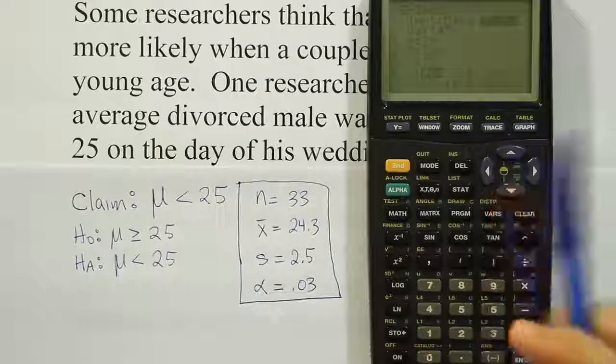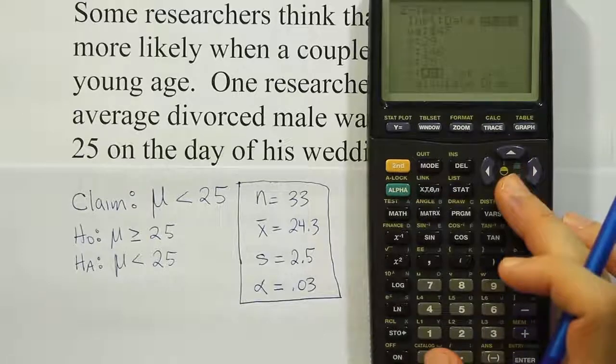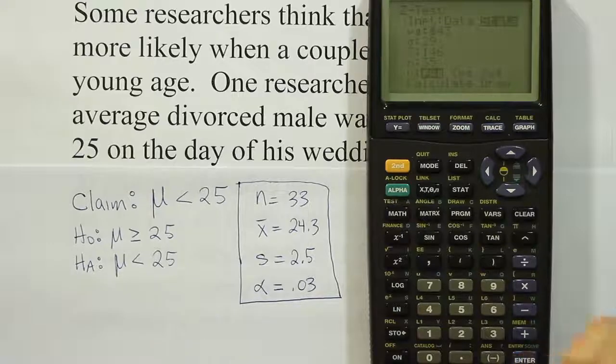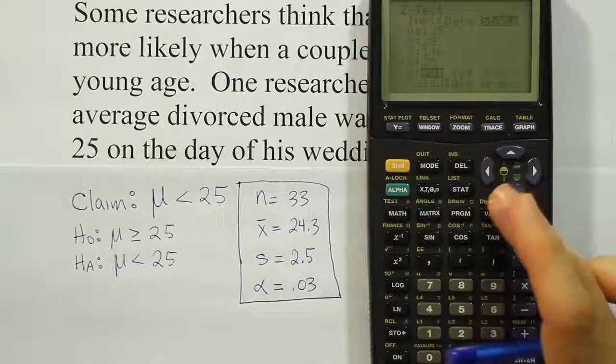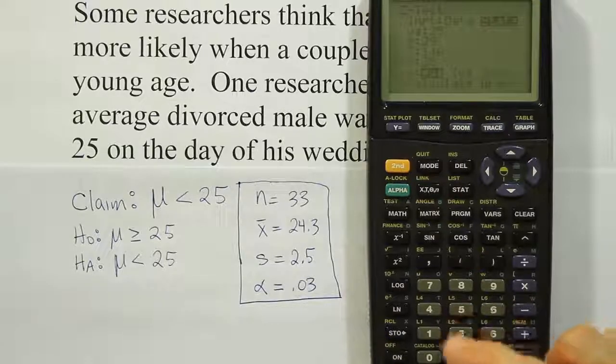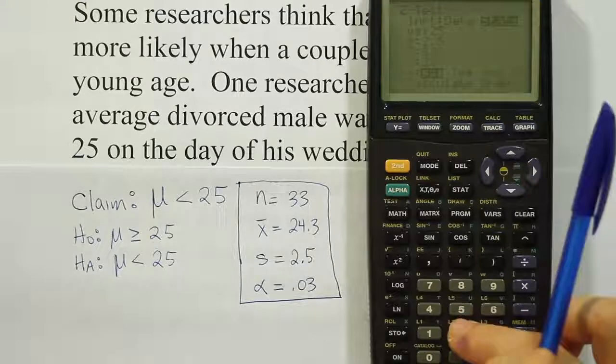So we have summary statistics. We don't have the raw data, so I'm going to highlight stats. Come down here. I want to put the number from H0, which is 25. And then I want the standard deviation, which we're going to use 2.5 there. Then come down to the x-bar value. That's 24.3.